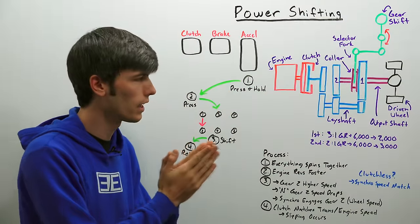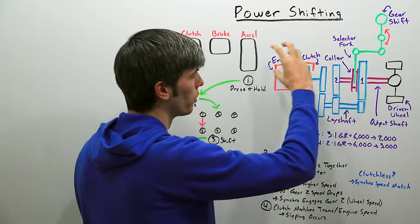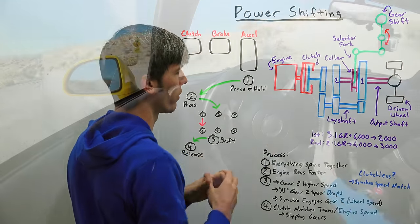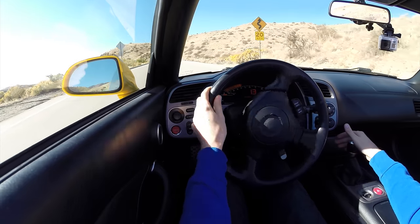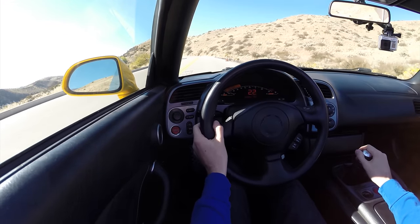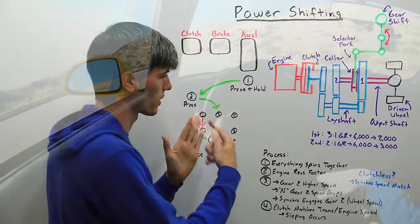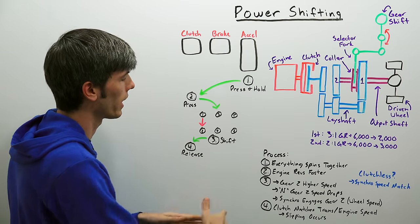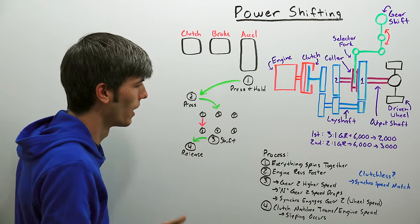But pretty much like best case here what you're doing by power shifting is forcing that clutch to slip a little bit before it can finally engage so you're going to have additional clutch wear for very little benefit.